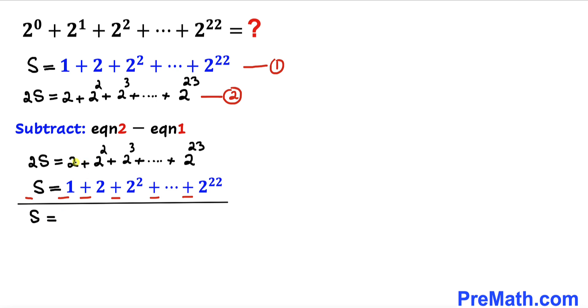And here we can see this 2 cancels out with this negative 2. This 2^2 cancels out with this negative 2^2, and likewise this cancels out with this next one.